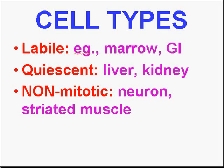To summarize what we said in the previous lecture: the quicker a cell turns over, going from labile to quiescent to non-mitotic, the longer the S-phase. This is true not only for regular cells, but also for tumor cells. That's why if you ever get a pathology report where it reports that the tumor has a high or long S-phase, that's not a good sign.